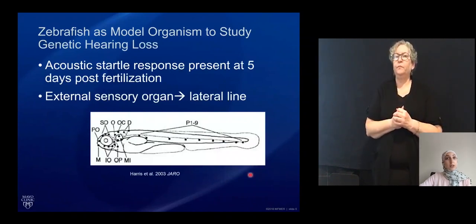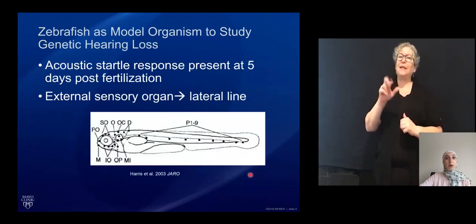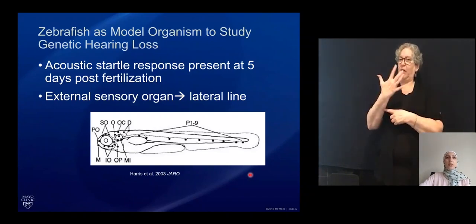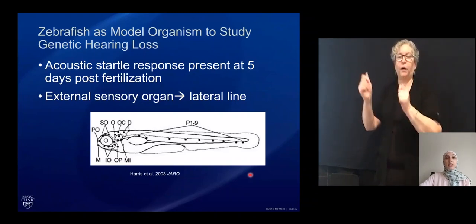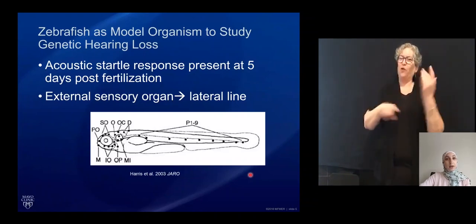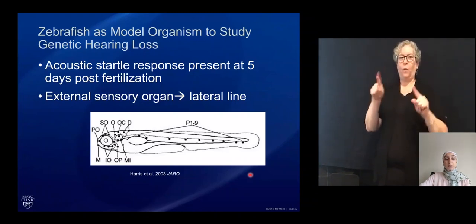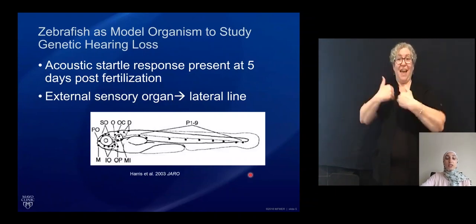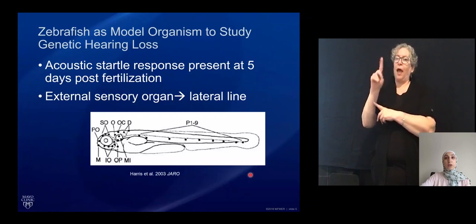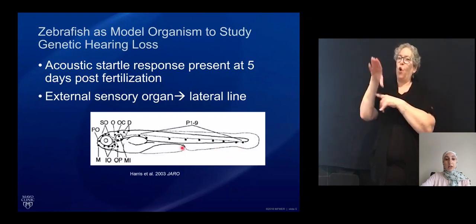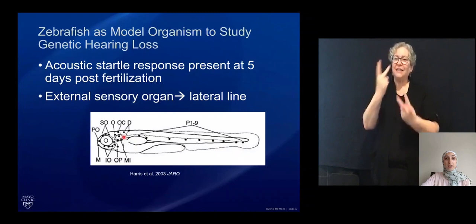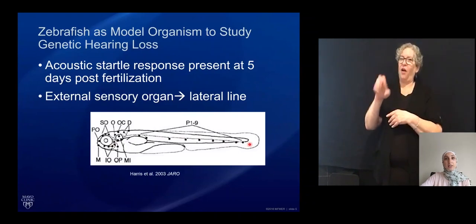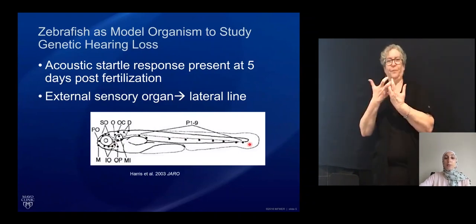For studying genetic hearing loss, zebrafish are advantageous because the acoustic startle response is present at five days post-fertilization. A zebrafish exhibits a characteristic startle response to an acoustic stimulus. In addition to having an ear with inner ear hair cells, zebrafish also have an external sensory organ called the lateral line, composed of neuromasts — small clusters of hair cells that detect pressure and vibration — that are functionally analogous to hair cells in the inner ear but much easier to access.